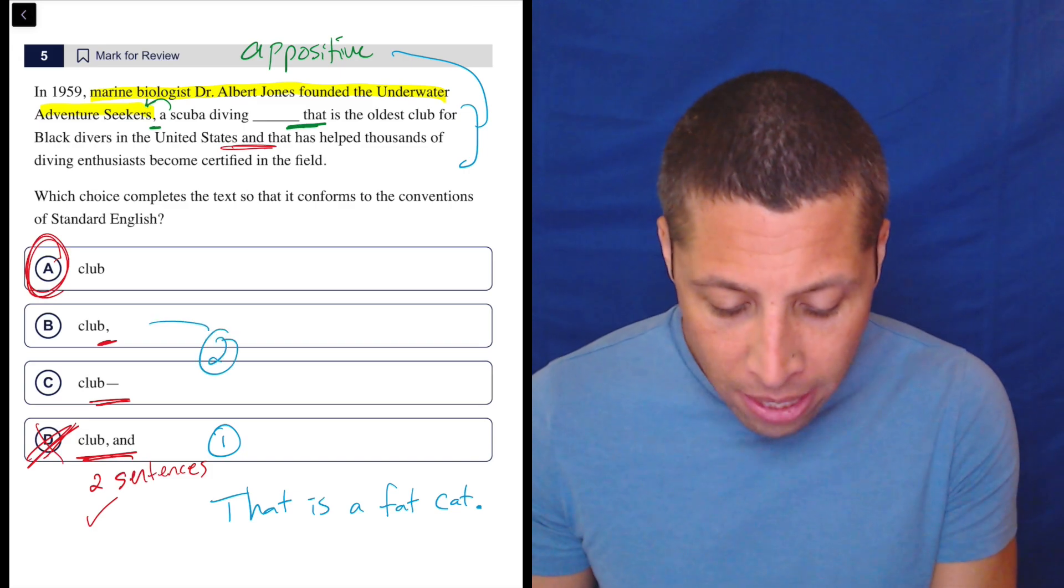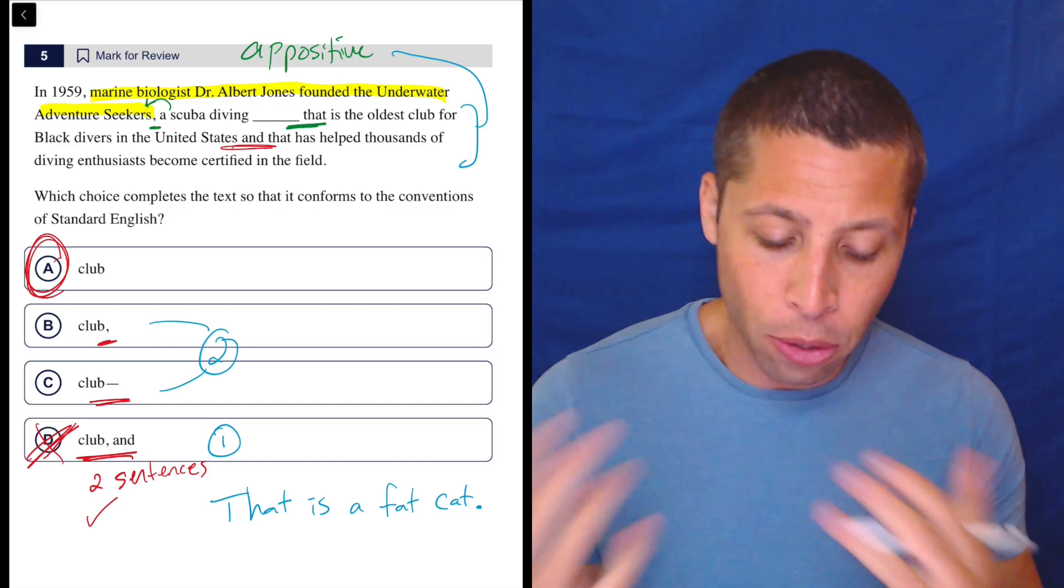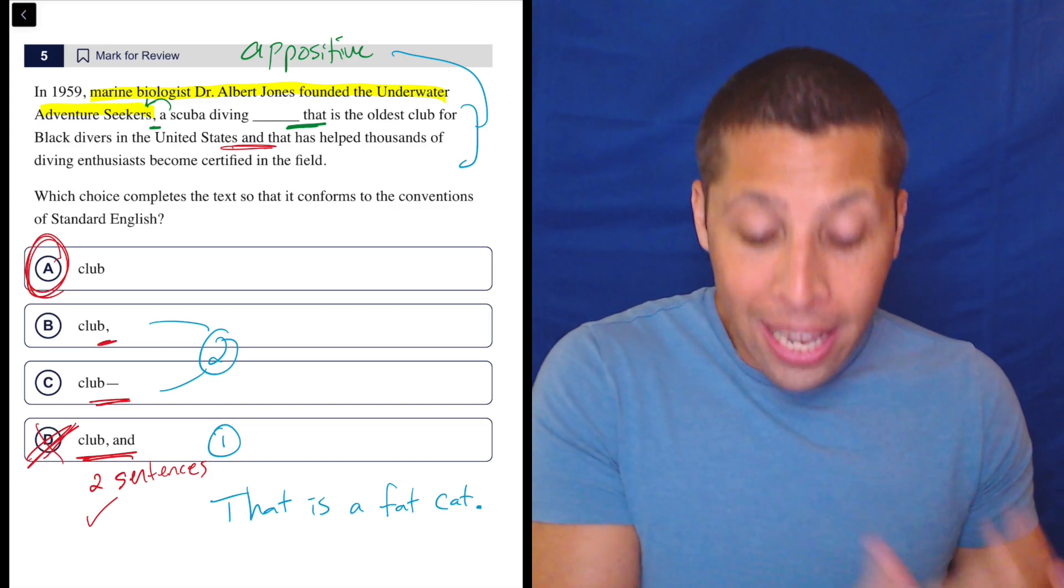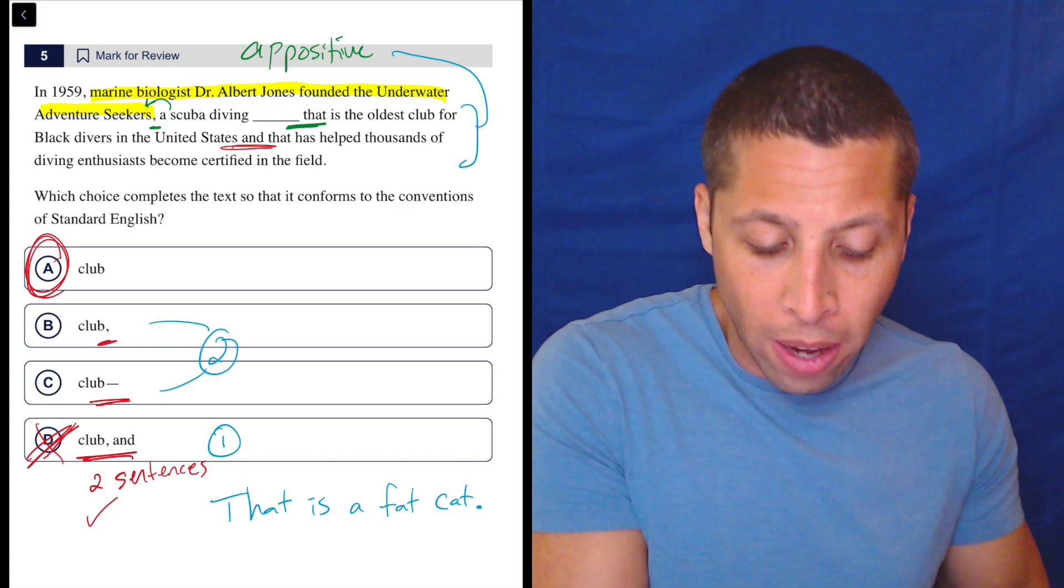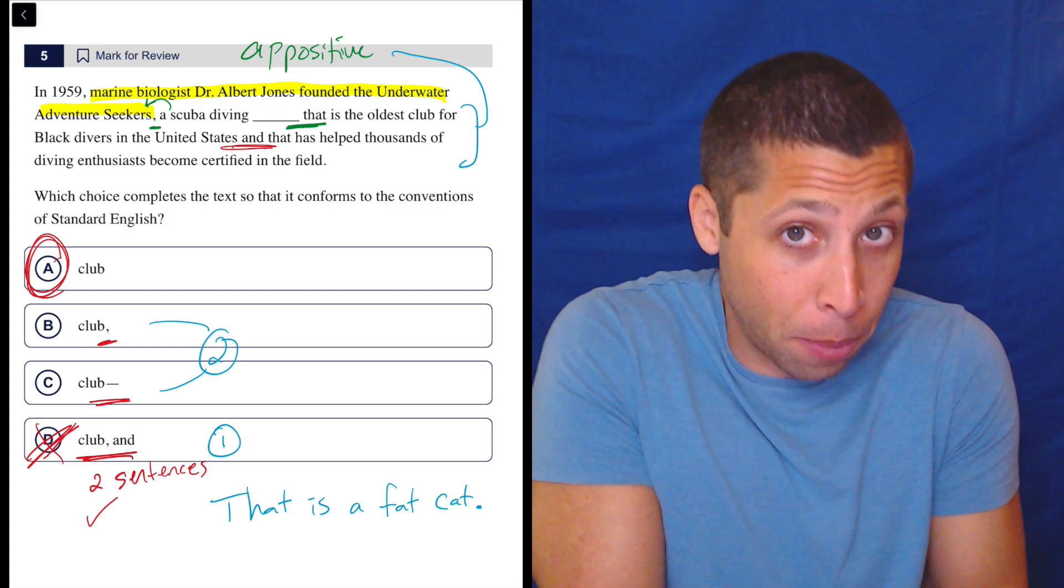Then I kind of looked at both of these. I didn't really think about what the difference might be between a comma and a dash. But either way, I was like, is there a reason to break this apart? I get that I could just end the sentence with 'marine biologist Dr. Albert Jones founded the Underwater Adventure Seekers, a scuba diving club.' And I could put a period there.